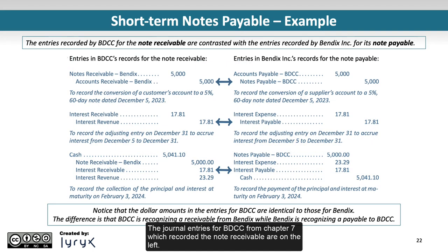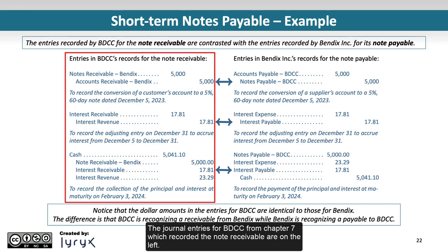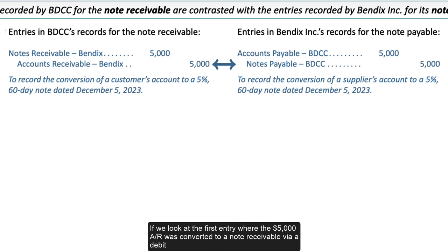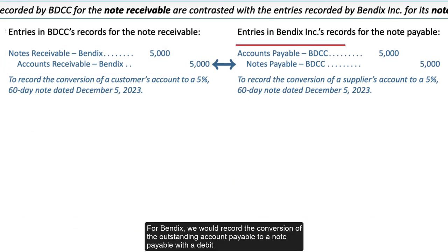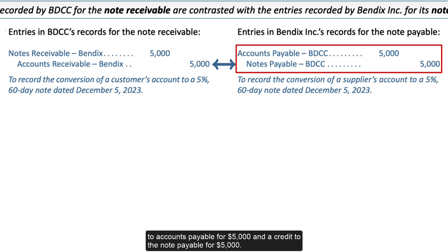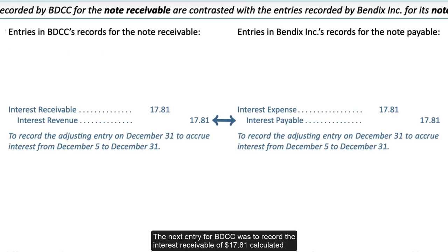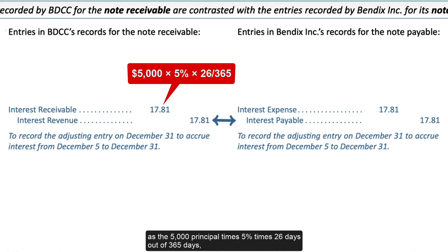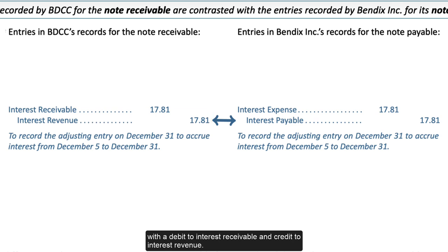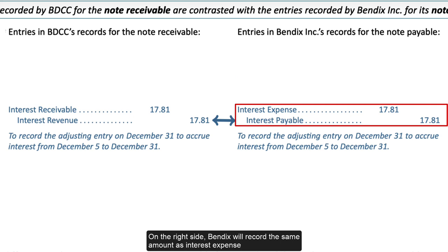The journal entries for BDCC from Chapter 7, which recorded the note receivable, are on the left. In the first entry, the $5,000 accounts receivable was converted to a note receivable via a debit to note receivable and credit to accounts receivable. For Bendix, we record the conversion of the outstanding accounts payable to a note payable with a debit to accounts payable for $5,000 and a credit to note payable for $5,000. The next entry for BDCC records interest receivable of $17.81, calculated as $5,000 principal × 5% × 26/365 days, with a debit to interest receivable and credit to interest revenue. Bendix records the same amount as interest expense and interest payable.